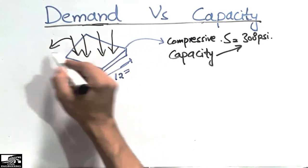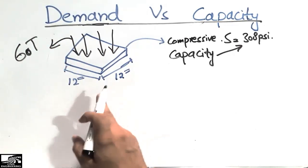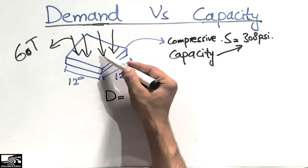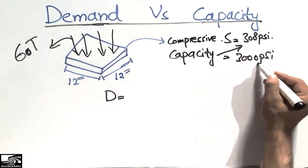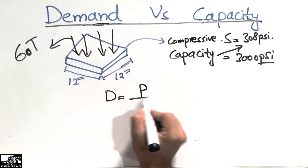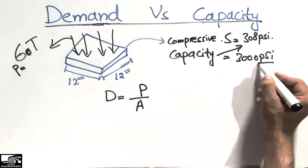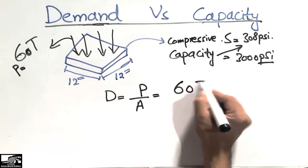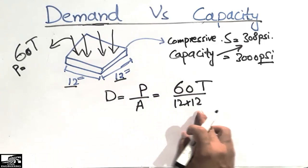Now assume a load of 60 tons is acting on this concrete block. We are going to find the demand on this concrete block. The demand should be in the same units as the capacity, which is psi. So, demand equals the load of 60 tons divided by the area, which is 12 inches by 12 inches, to get units of pounds per square inch.